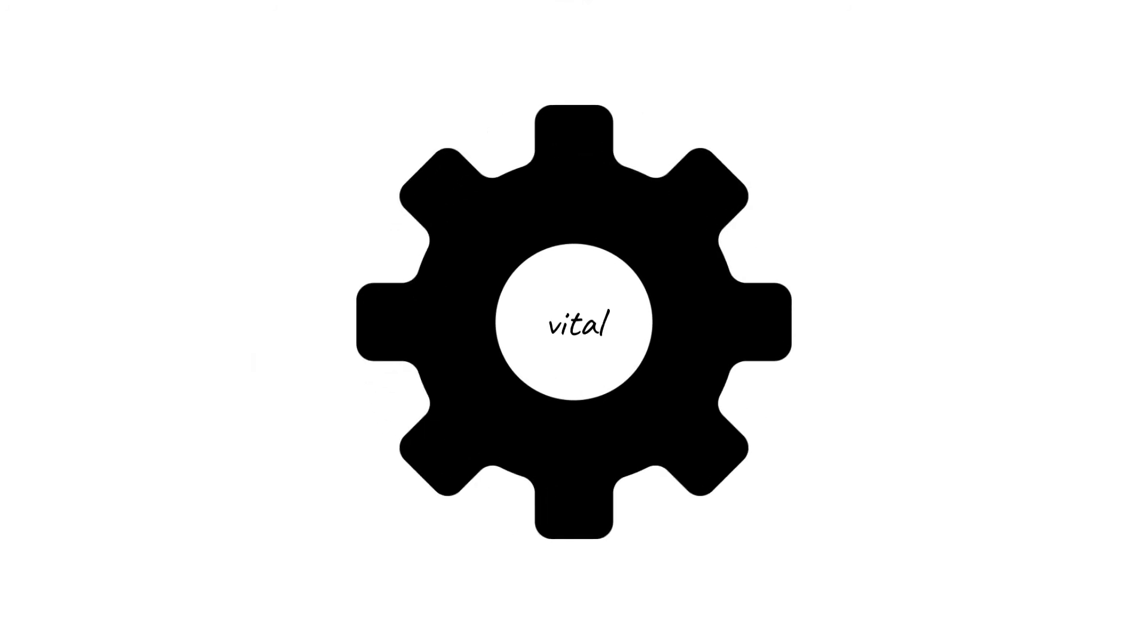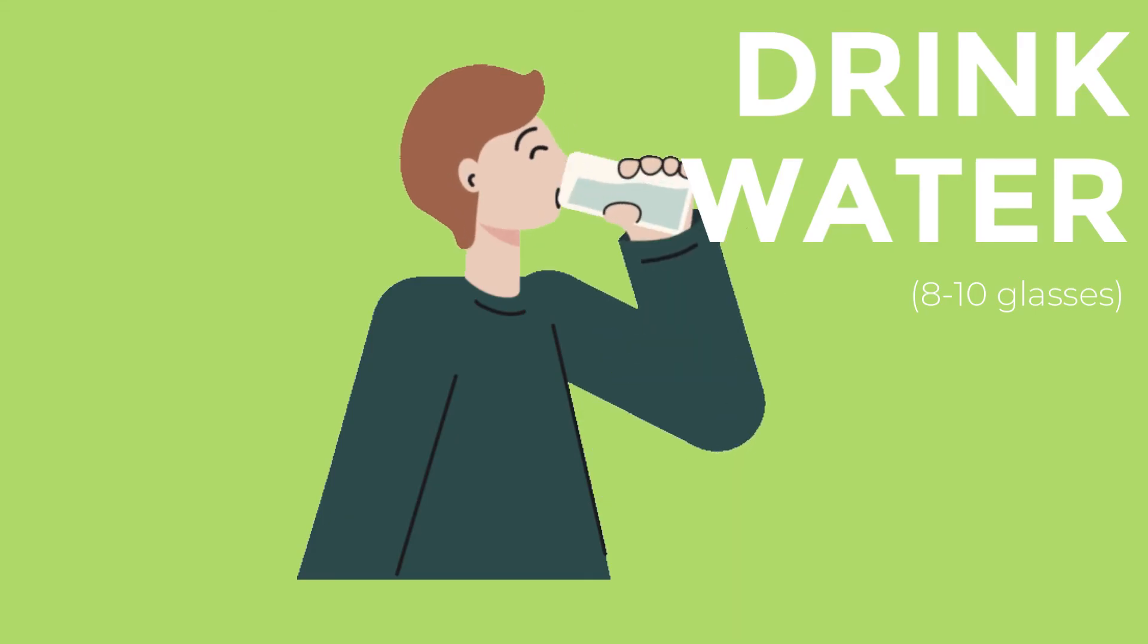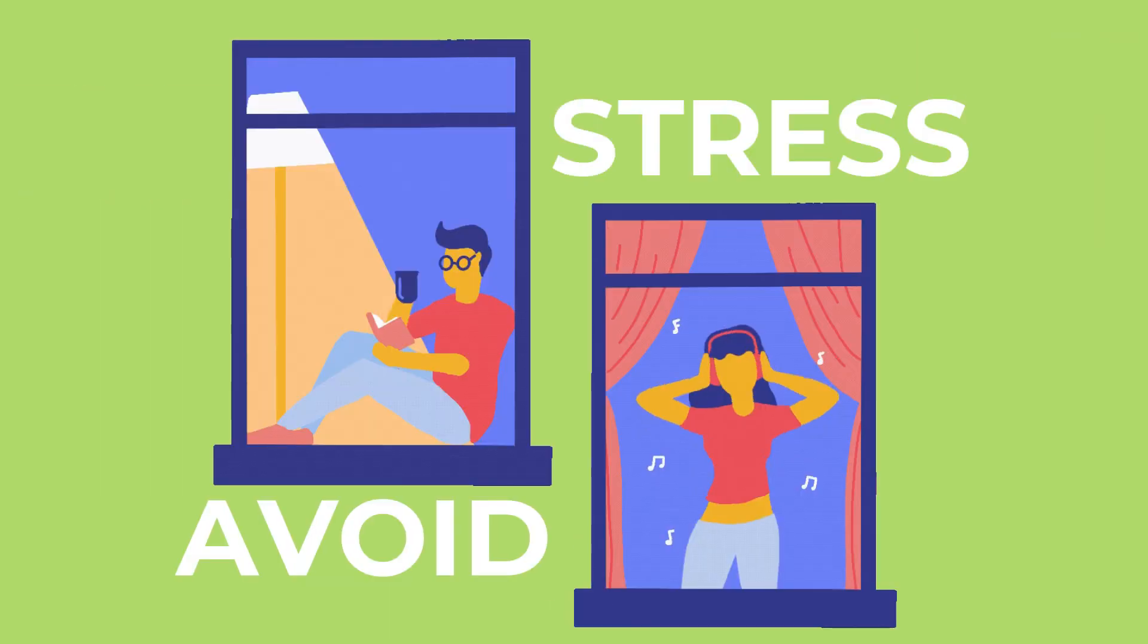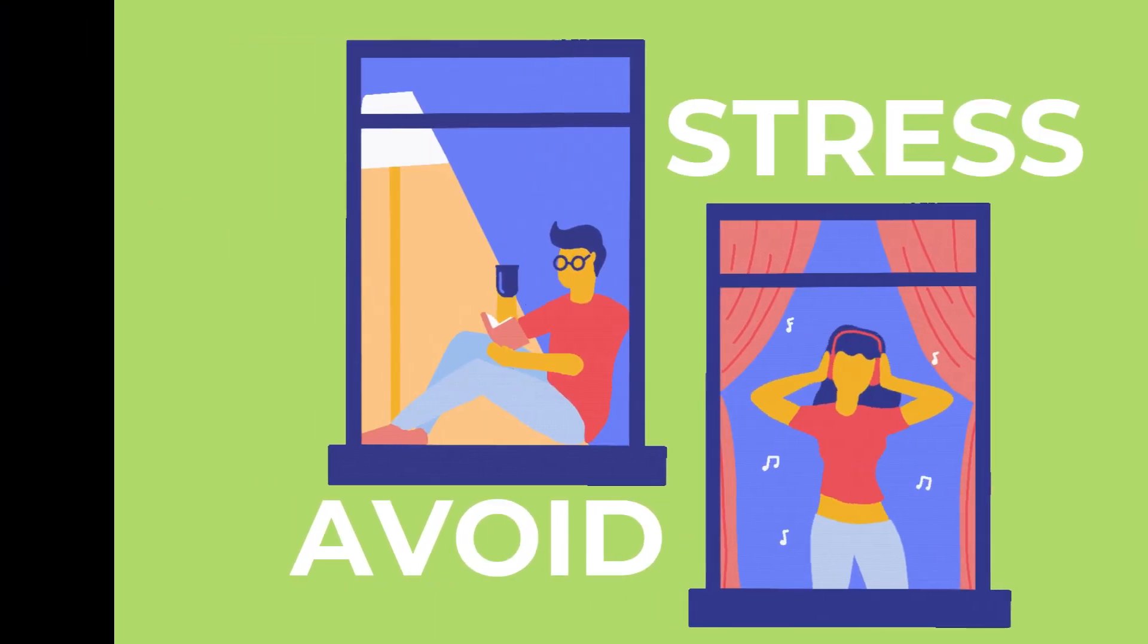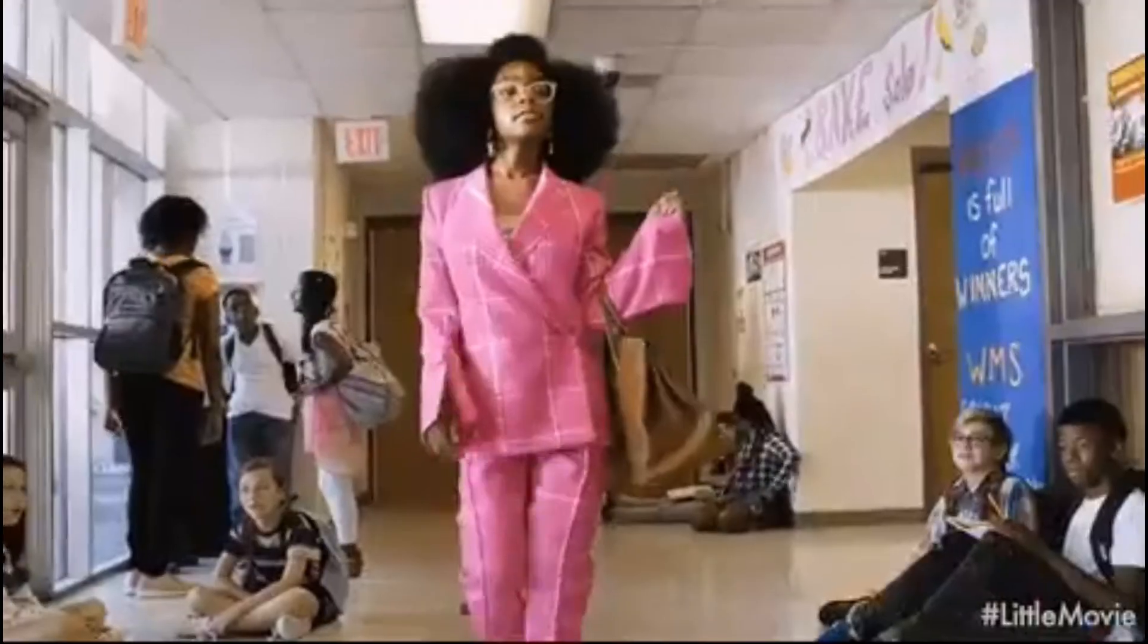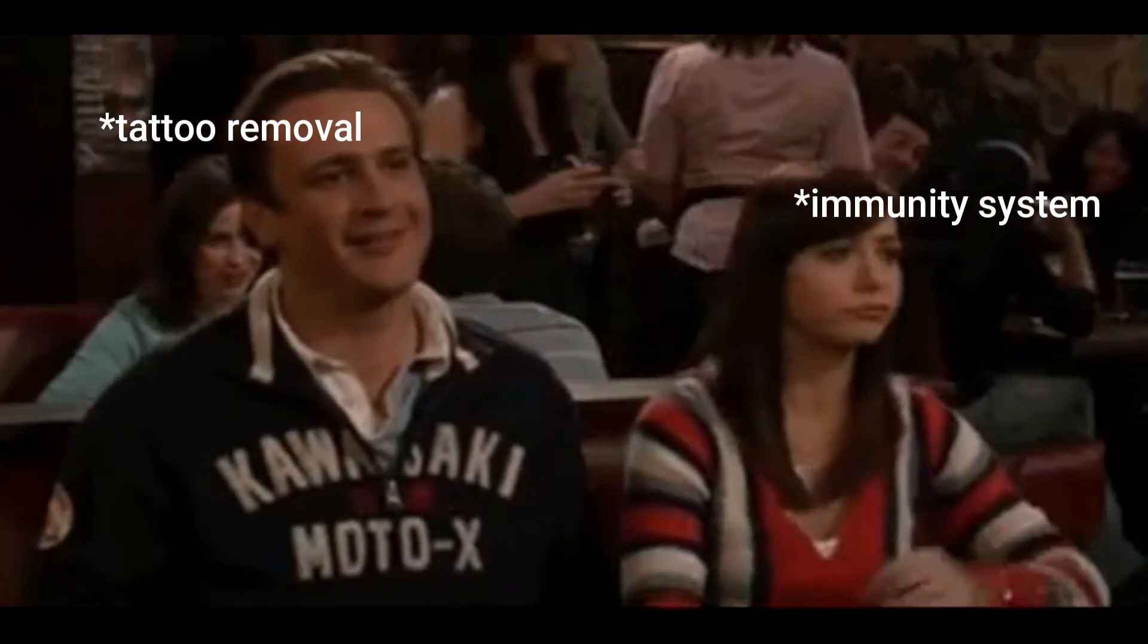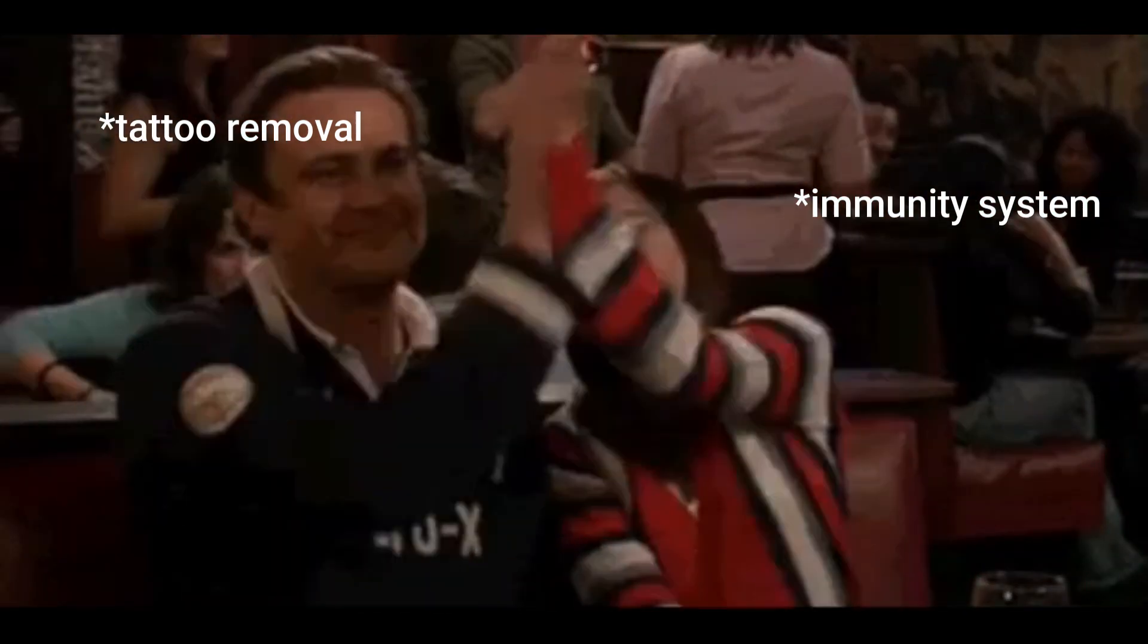It is during this time that the body's immune system clears up the ink particles broken down by the laser. The immune system thus has a vital role to play. It is important to make sure that the body feels healthy and calm during this time. Drink a lot of water, 8 to 10 glasses a day is advisable. Exercise but do not overdo it and avoid stress. This will ensure that the immune system is working at its best. Consequently, the tattoo removal process will also work at its optimum capacity.